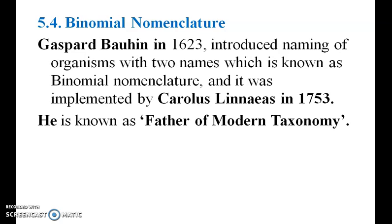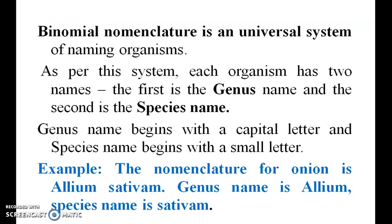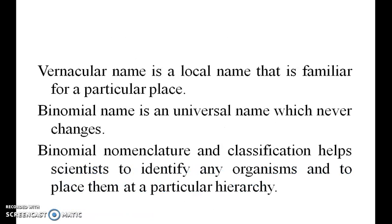Binomial nomenclature. Caspard, in 1623, introduced the naming of organisms with two names, which is known as binomial nomenclature. It was implemented by Carlos Linnaeus in 1753. Binomial nomenclature is a universal system of naming organisms. The binomial name is a universal name that is familiar for a particular organism and never changes.